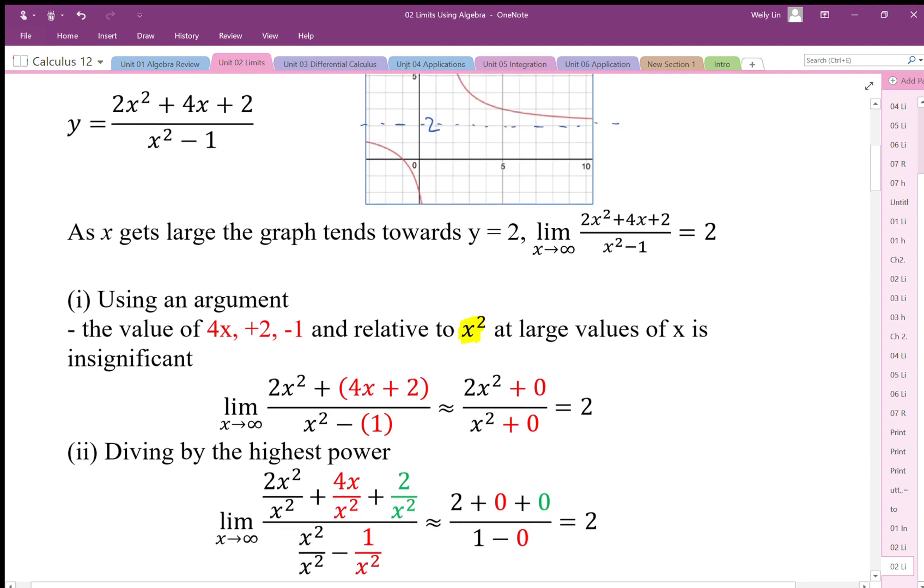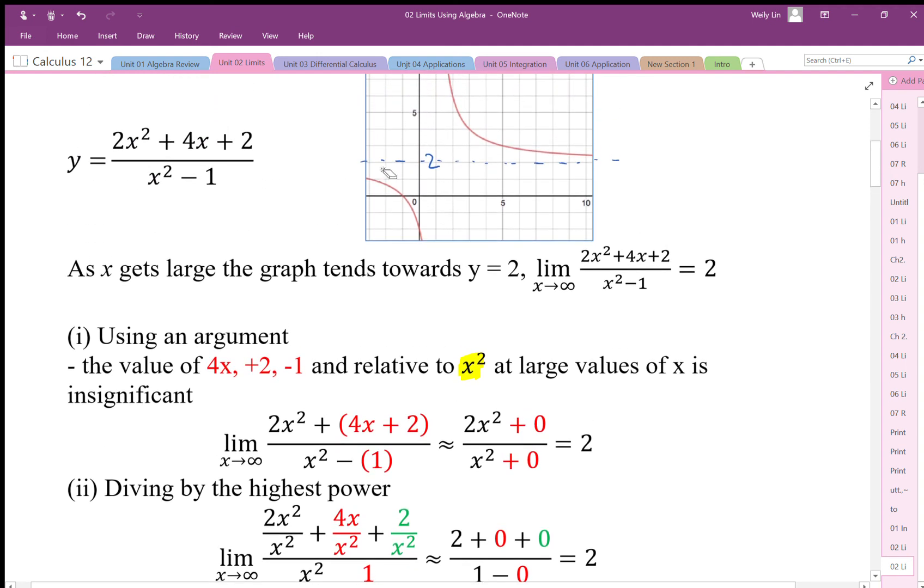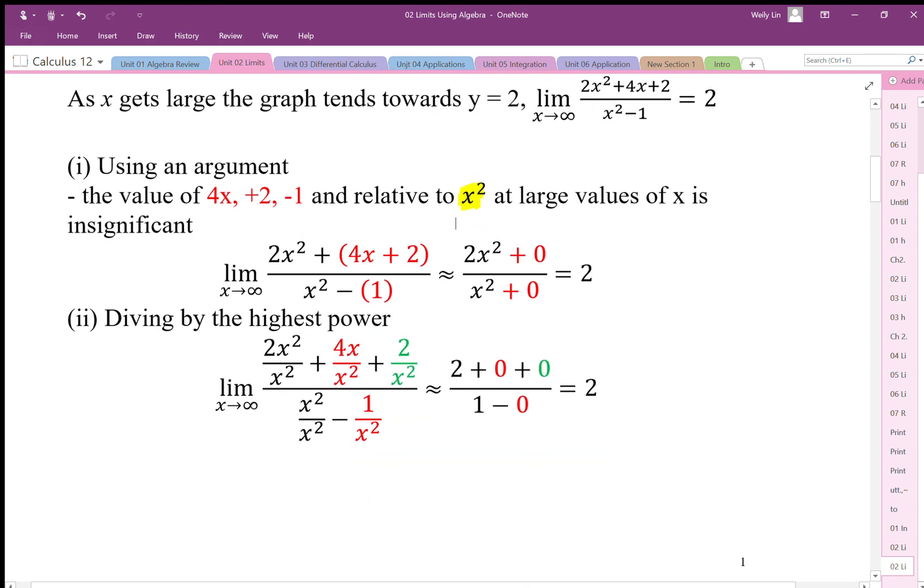Notice that everything's consistent - the graphical result looks like it's 2, the algebraic results look like they're 2 as well. These are ways we can start using algebraic properties to evaluate limits because we're not always going to be able to look at the graphs or tables.